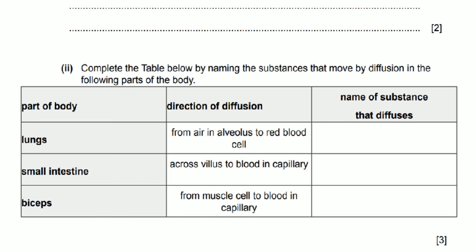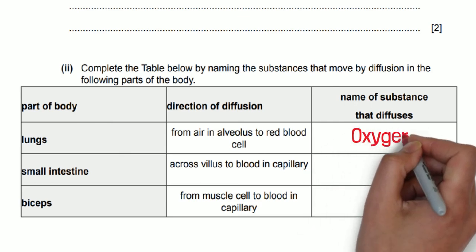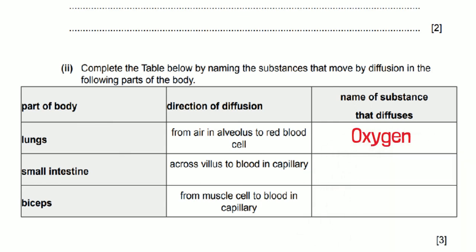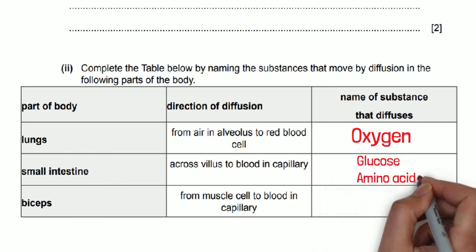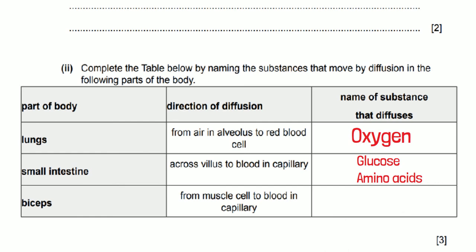The second one is the small intestine and the direction is from the villi to the blood in the capillary. We need to think about what nutrients we might need to absorb so we can say glucose or amino acids. The last one is talking about the biceps and the direction is from the muscle cell to the blood in the capillary. Now again this could be either oxygen or carbon dioxide but because it's from the muscle to the blood then it's carbon dioxide.